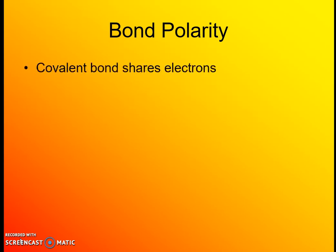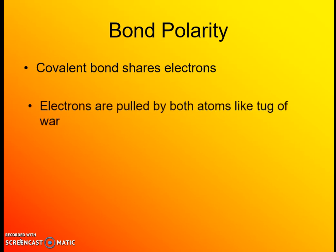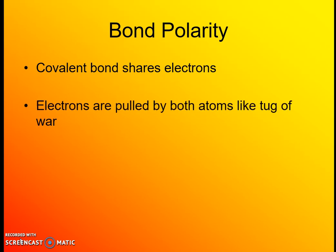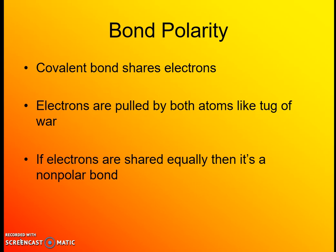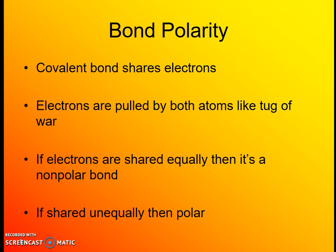Bond polarity is a result of two different atoms sharing a pair of electrons, but they end up with unequal sharing between them. Since two atoms have a different desire for electrons — a different electronegativity — you end up with a tug-of-war over those electrons, sometimes resulting in what we call a polar bond. That happens when those electrons are shared unequally.